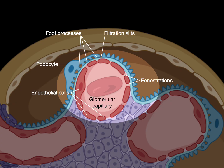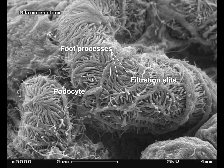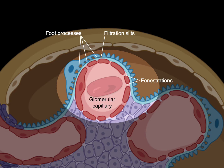I've gone from the internal to the outside, so let's now look on the outside of this filtering apparatus. Here we have a scanning EM at 5,000 magnification. There's a podocyte — podo means foot — and between the interdigitating foot processes of adjacent podocytes are these filtration slits. That's the last portion of our glomerular filtering apparatus.